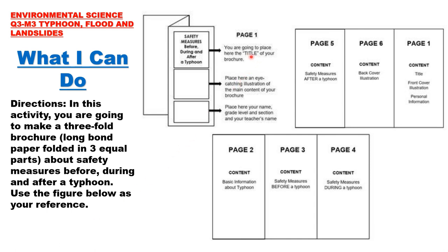For the brochure: Page one — the title of your brochure (e.g., 'Safety Measures Before, During, and After a Typhoon'), an eye-catching illustration, and your name, grade level, section, and teacher's name. Page two — basic information about typhoon. Page three — safety measures before a typhoon. Page four — safety measures during a typhoon. Page five — safety measures after a typhoon. Page six — back cover illustration.